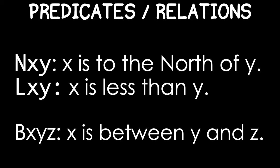This is especially important because we can have multi-place predicates which express relations between things. For example, we might let NXY mean X is to the north of Y, or LXY mean X is less than Y. These are two-place relations. To express a complete thought, N requires two lowercase letters, and it means that the first is to the north of the second. We can also have three-place relations. For example, BXYZ could mean X is between Y and Z.